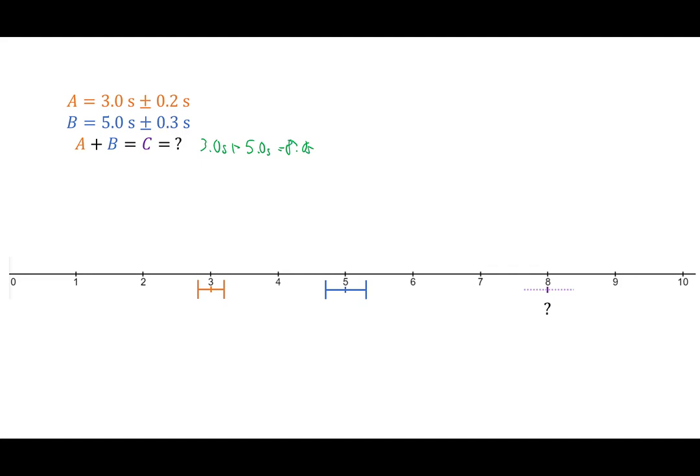The bigger question is, what is that range? A simple way that you might think of is simply add up these two uncertainties. Because why not, right? If the largest possible number for A is here, 3.2, and the largest possible number for B is 5.3, if you sum that up, the largest possible number should be 8.5. Therefore, 8 plus or minus 0.5 seems like a reasonable thing.